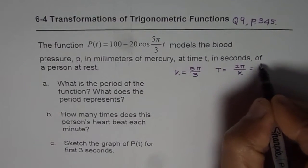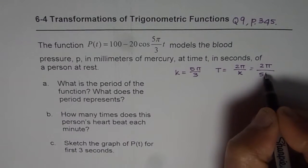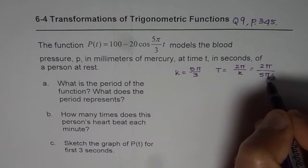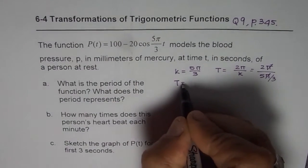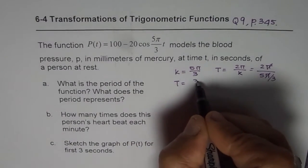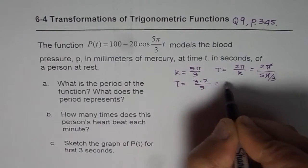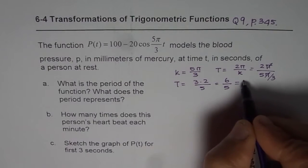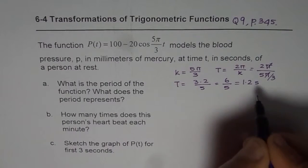So it is 2π divided by 5π over 3. π and π cancel, and 3 goes on the top. So we get T equals 3 times 2 over 5, or 6 over 5. You may write it in decimals also: 1.2, that is the time period in seconds.